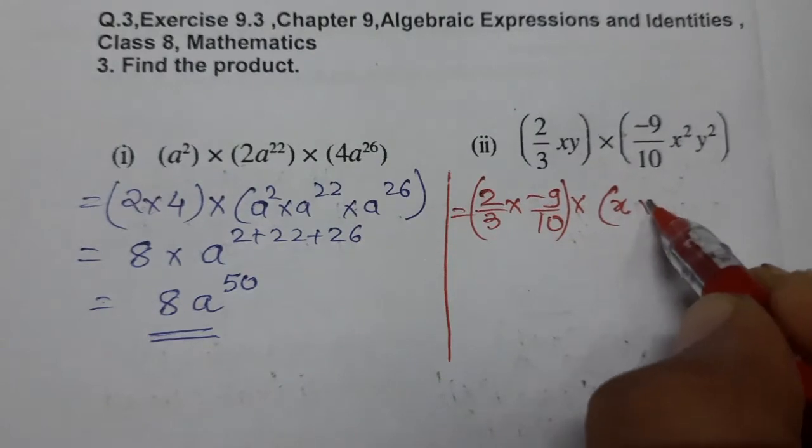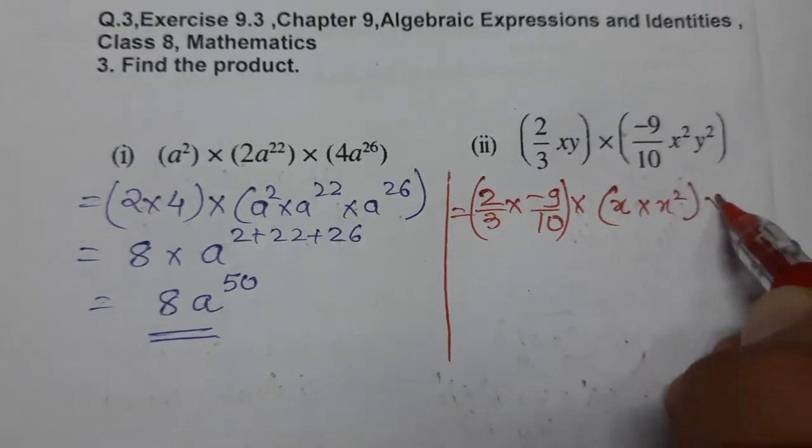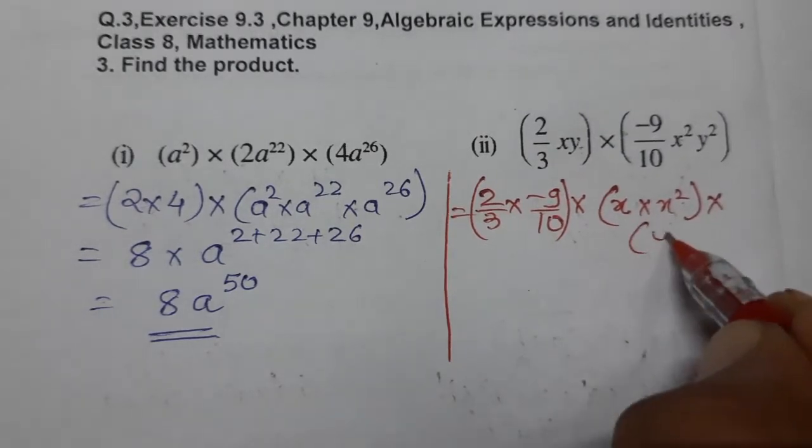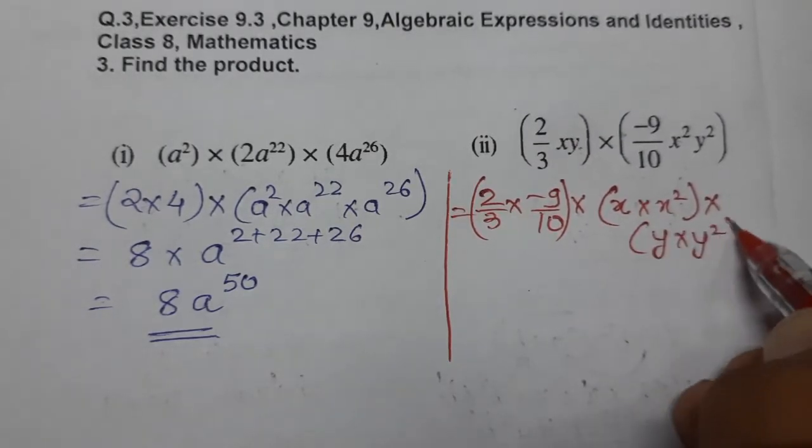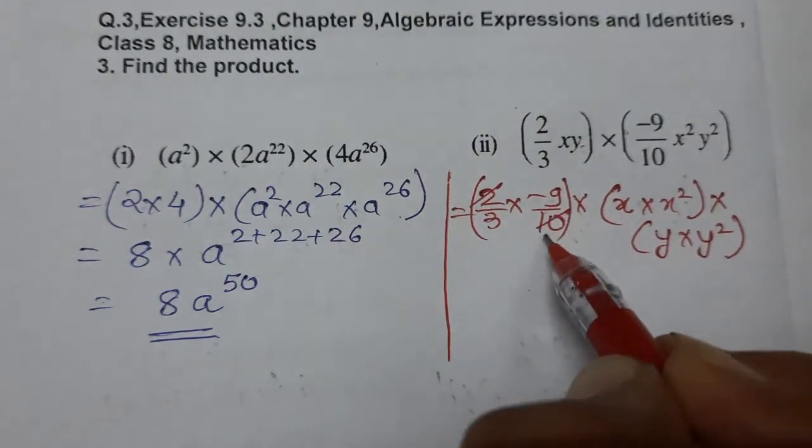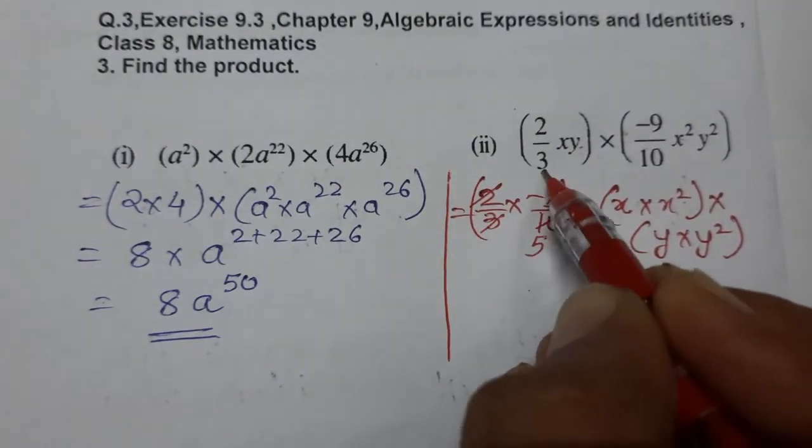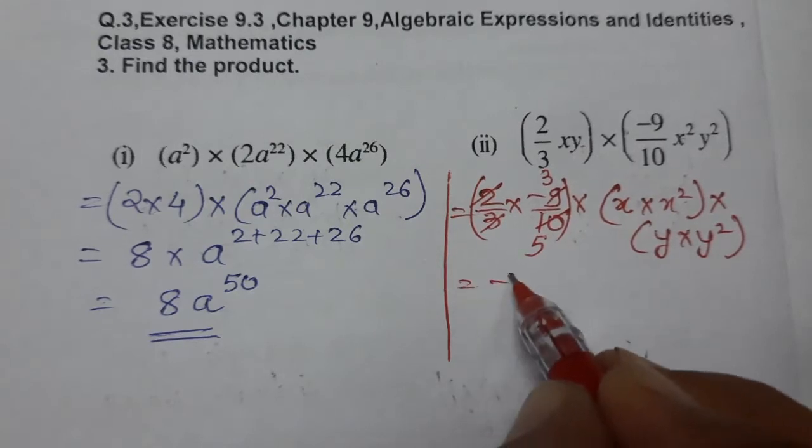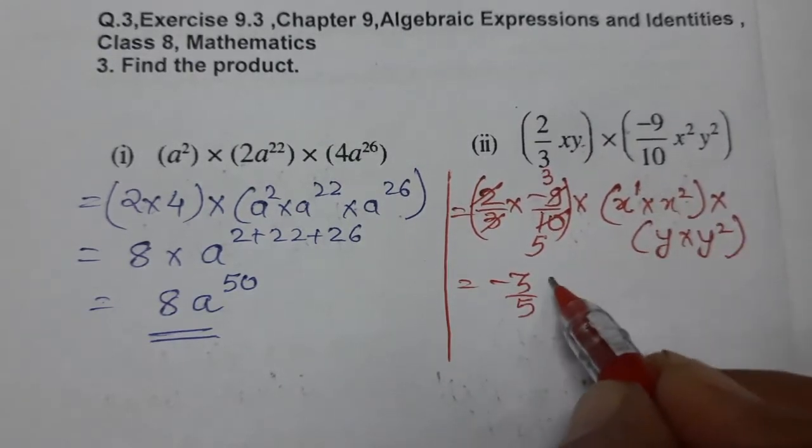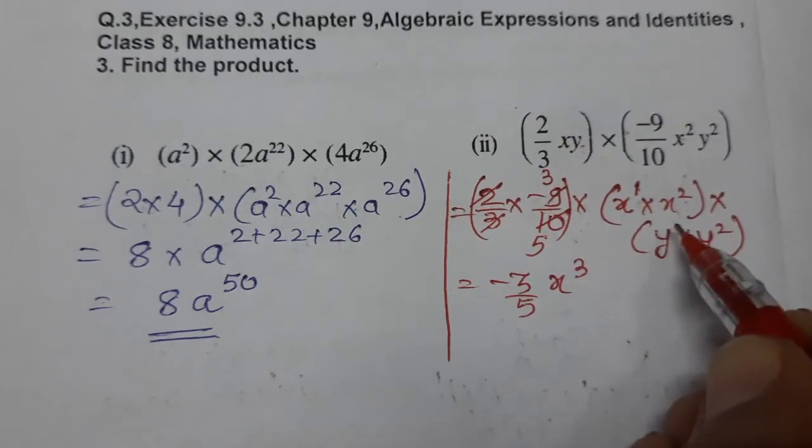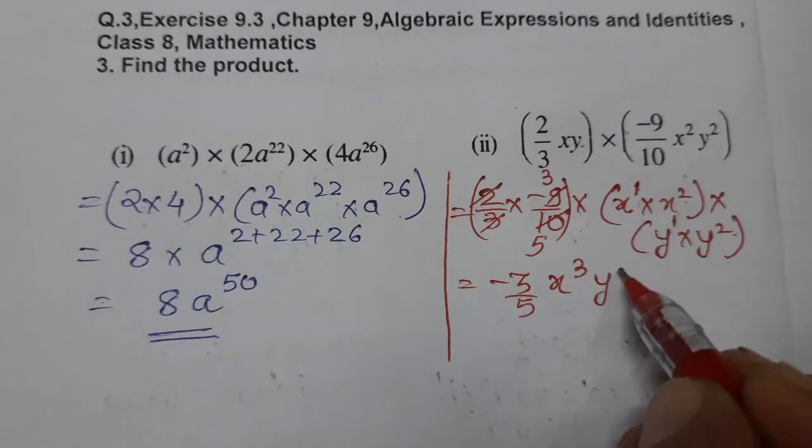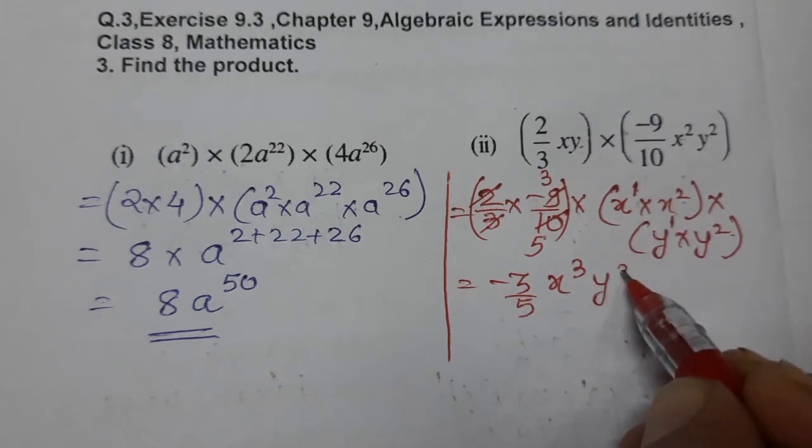Now just simplify: 2 divides 10, 3 divides 9. So what we'll get is -3/5. For x, 1 plus 2 equals 3. And here, 1 plus 2 again equals 3. So we got -3/5 x raised to 3, y raised to 3.